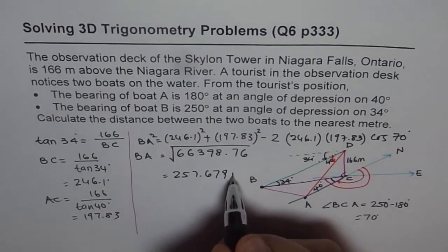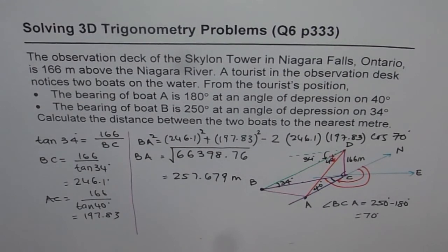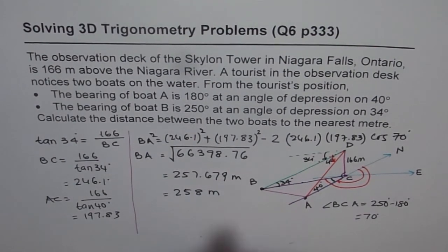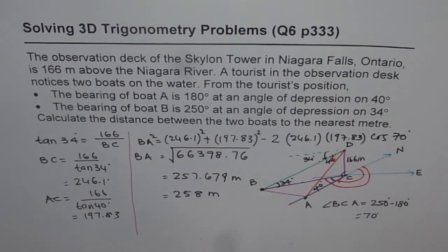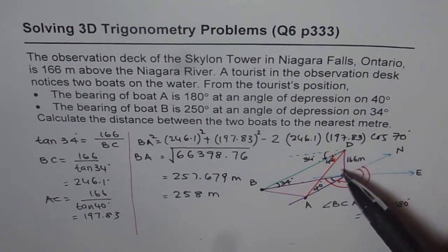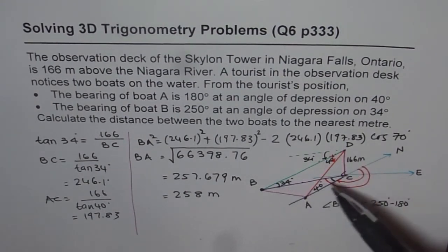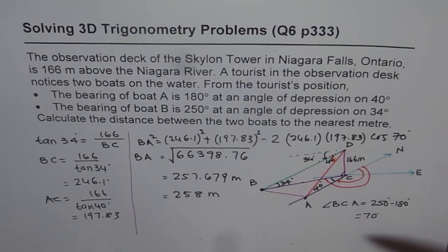The units are meters. The question asks for the distance to the nearest meter, so we round 257.679 to get 258 meters. That is the distance between the two boats. The idea of taking this example was to explain how to draw the diagram to represent the situation. This diagram is typical when both boats are in a similar direction, causing some overlap that makes it difficult to visualize. I hope it is now absolutely clear and you can do similar questions. Thank you and all the best.